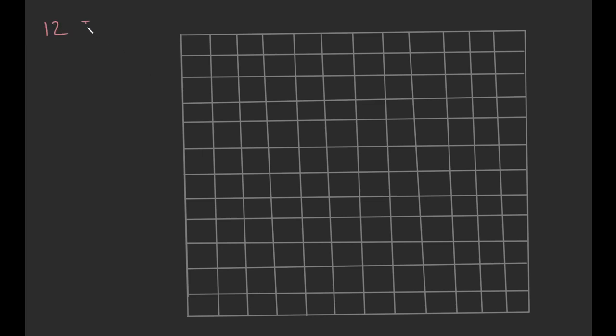The next thing in talking about making a 12-tone row is making a 12-tone row matrix. This matrix makes your tone row super awesome because you can see other rows that are related to your current row.